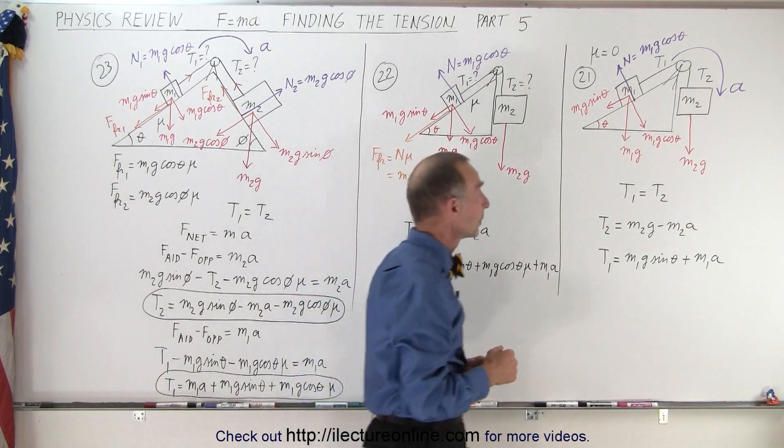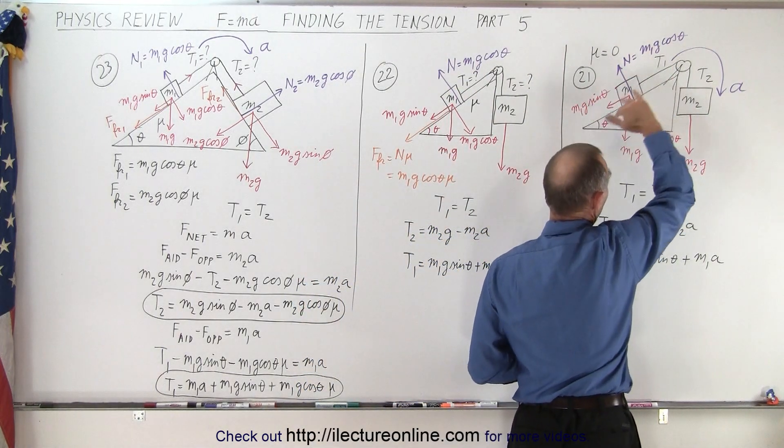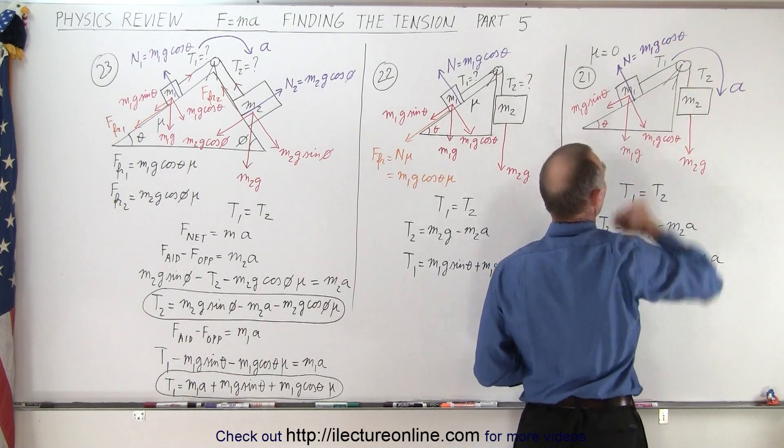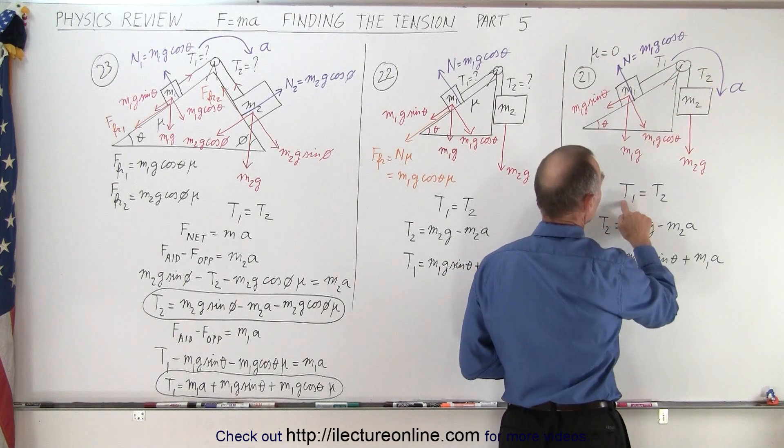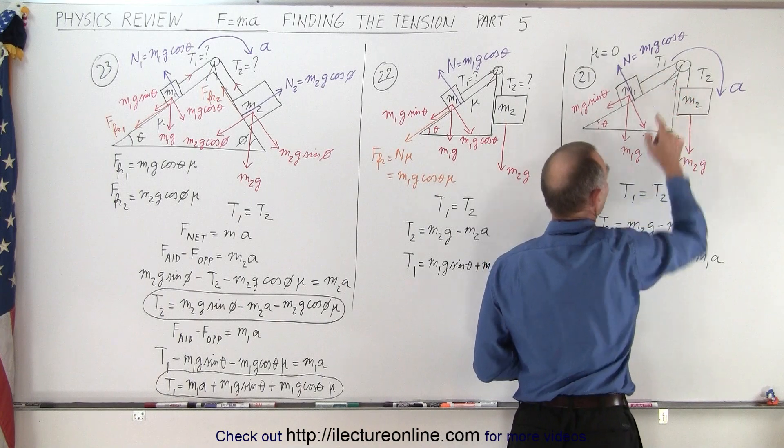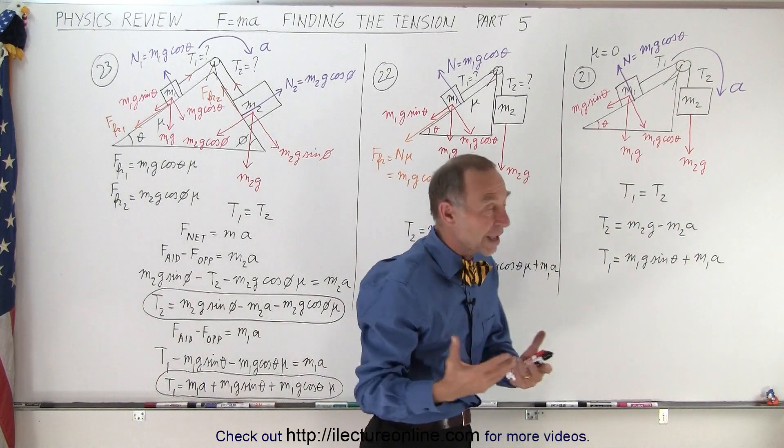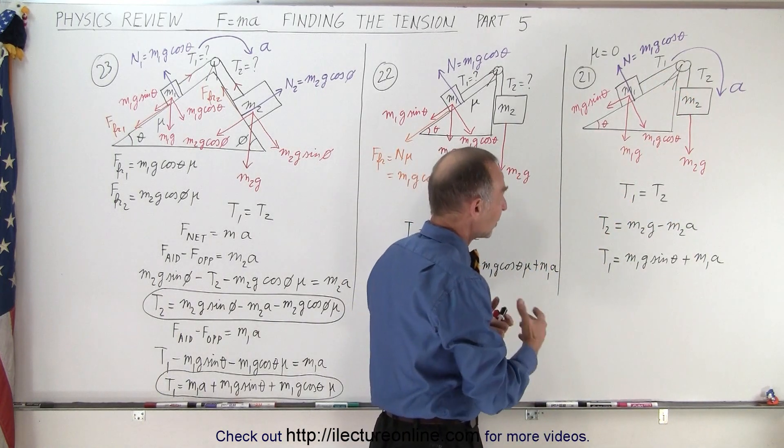Well there's no friction. Notice everything will accelerate in a clockwise direction. M2 will come down and M1 will go up the incline. The tension must be the same on both sides of the pulley because the pulley has no mass and no friction. That needs to be indicated.